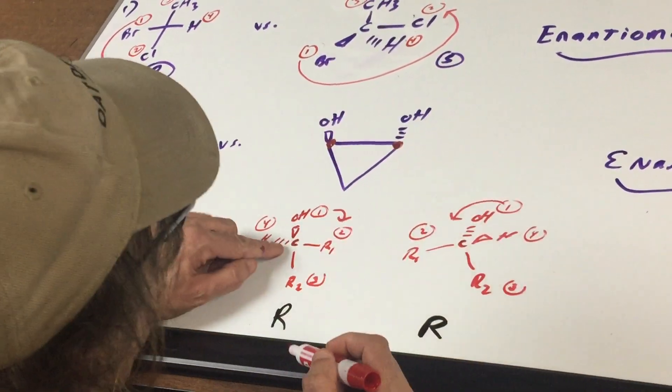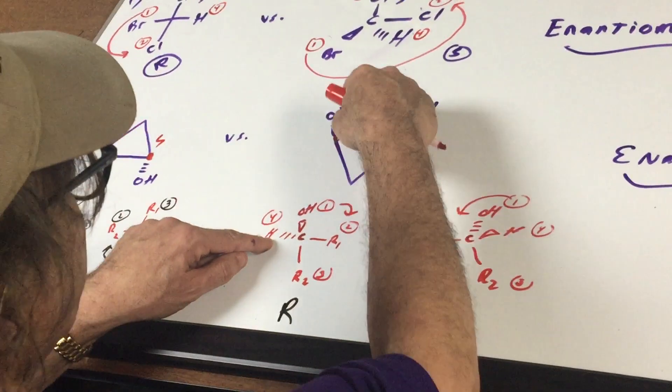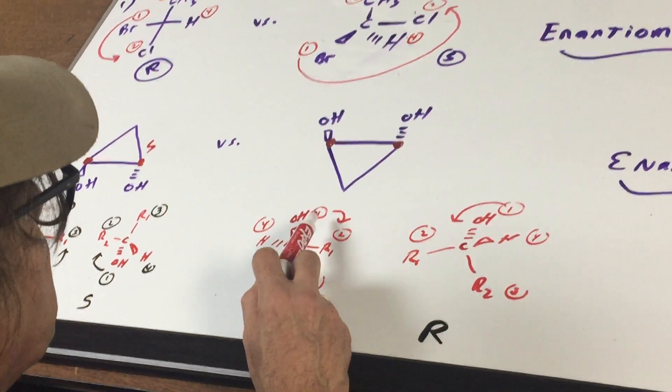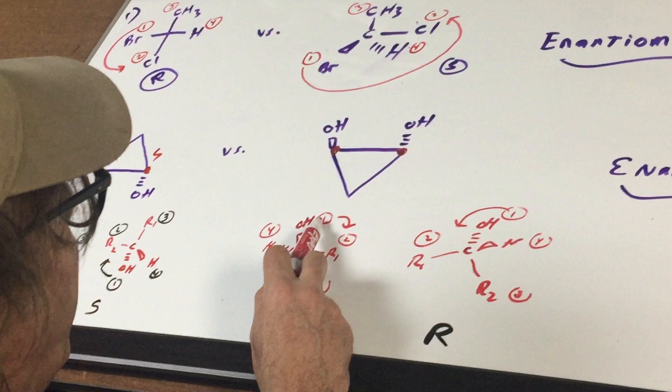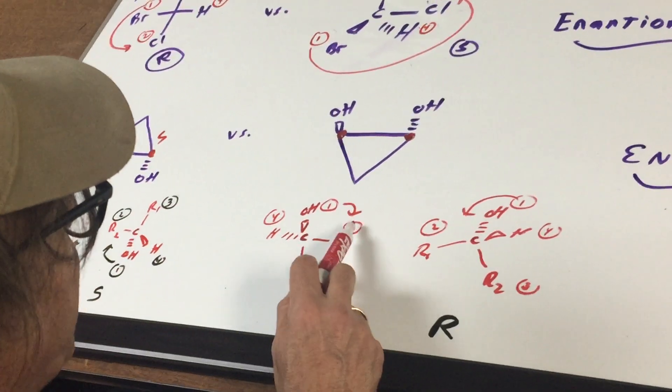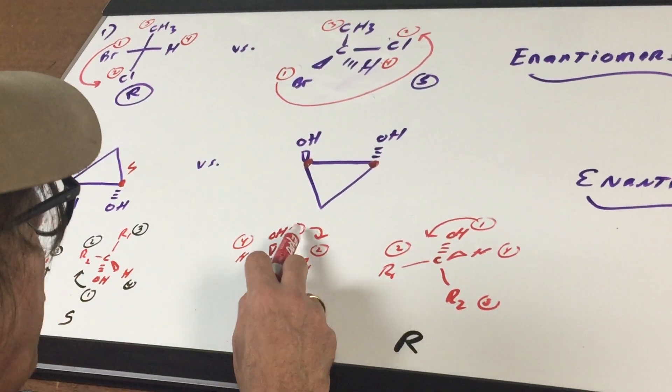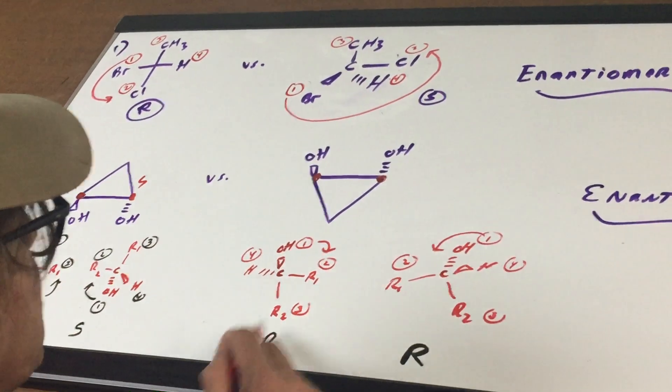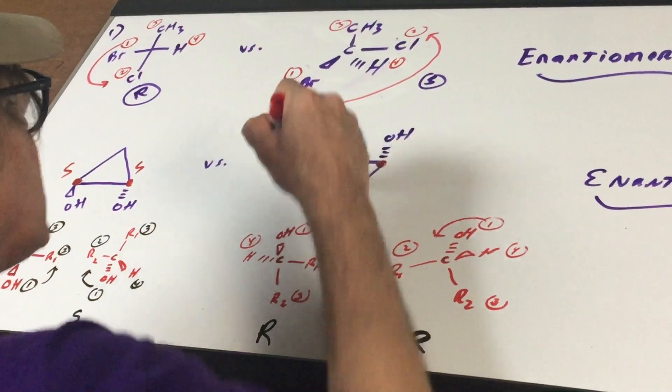You do the exact same thing for the next one. You got a carbon with an OH. There's an invisible H. To the right of me, I'll call it R1. Underneath is R2. The same exact fashion. OH is one. To the right of me with the branch point is two. Then three, then four. Looks like an R. Number four is in the correct position. So it stays an R. So that's why it's an R.